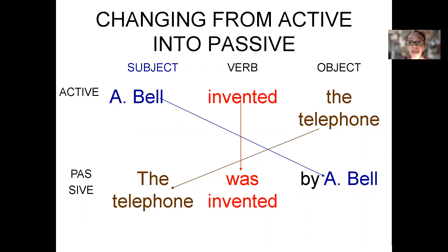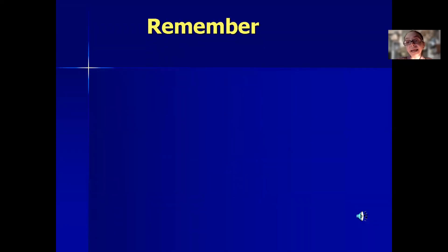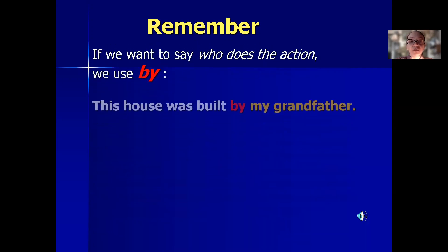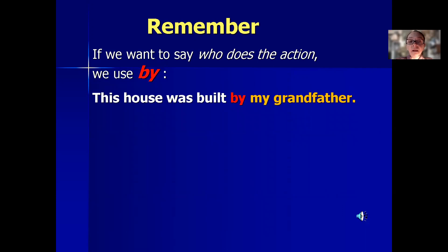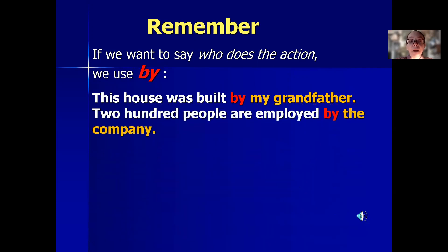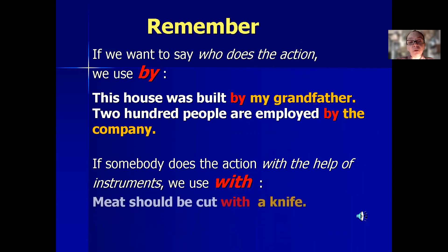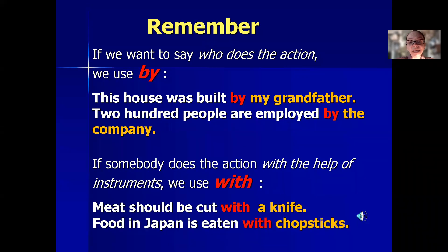By the way, the two most common prepositions in the passive are 'by' and 'with.' We use 'by' with the doer — 'the house was built by my grandfather', 'lots of people are employed by this company.' We use 'with' to talk about instruments — 'meat should be cut with a knife', 'food is eaten with chopsticks in Japan.'